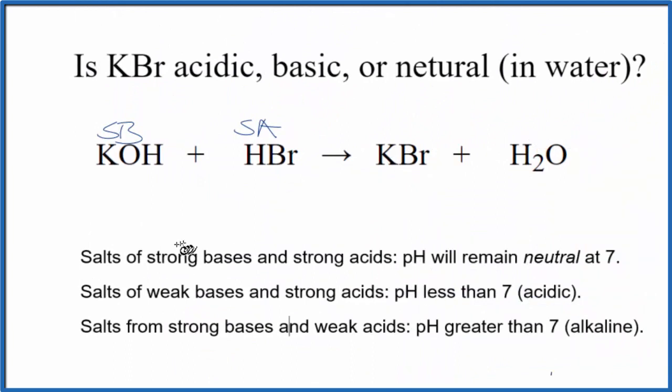So according to our rules, if we have a strong base and a strong acid, the pH will be neutral at 7. So in answer to our question, potassium bromide, this KBr, when we put it in water, it'll form a neutral solution.